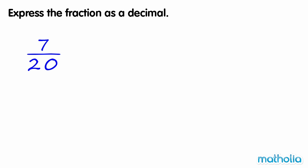We cannot divide 7 by 2 without a remainder, so our only choice is to multiply the numerator and the denominator by 5 instead.